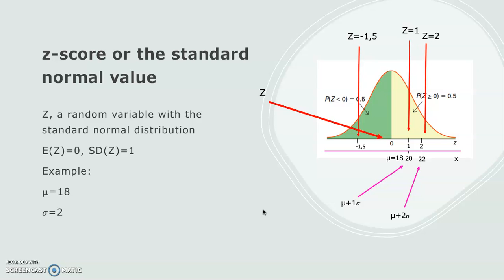Similarly, a z-score of -1.5 implies that the given value is 1.5 standard deviations below the mean, or x = 15.